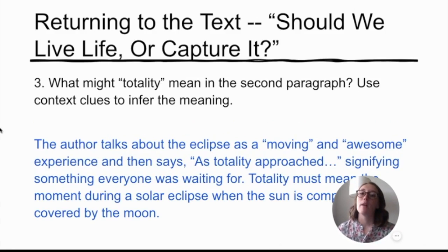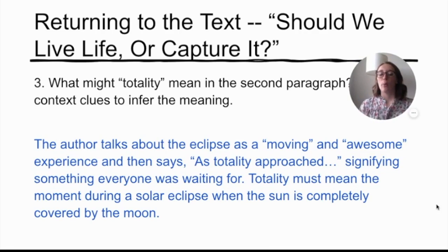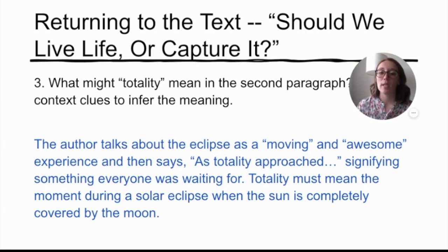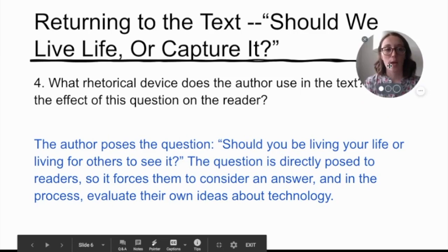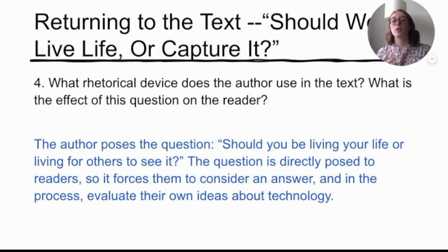Question three: What might 'totality' mean in the second paragraph? Use context clues to infer the meaning. The author talks about the eclipse as moving and awesome, then says 'as totality approached,' signifying something everyone was waiting for. Totality must mean the moment during a solar eclipse when the sun is completely covered by the moon. Question four: What rhetorical device does the author use? The author poses a question — 'Should you be living your life or living it for others to see it?' The question is directly posed to us, the readers, which forces us to consider an answer and evaluate our own ideas about technology.